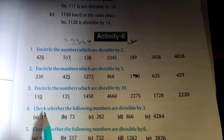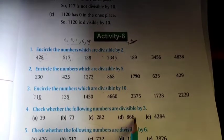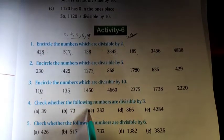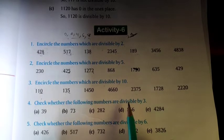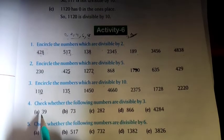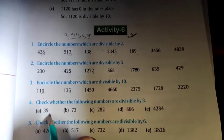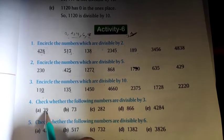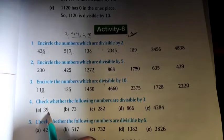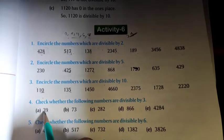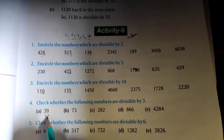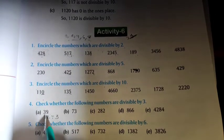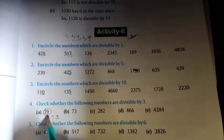Now the next question: check whether the following numbers are divisible by 3. Children, remember the divisibility rule by 3 — if the sum of the digits is divisible by 3, then the number is divisible by 3. Here the digits are 3 and 9, and the sum of the digits is 12, and 12 is divisible by 3, so this number is divisible by 3.